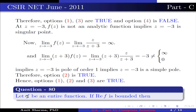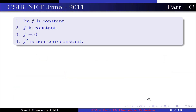Question number 80. Let f be an entire function. If the real part of f is bounded, then: option 1, imaginary part of f is constant; option 2, f is constant; option 3, f = 0; option 4, f' is a non-zero constant.